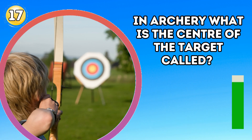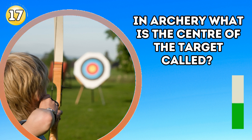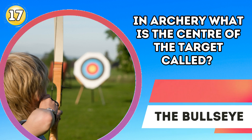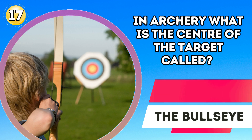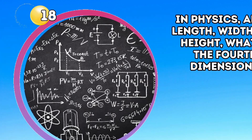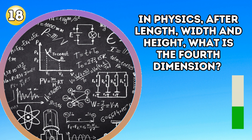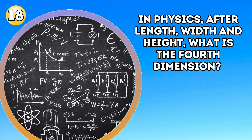In archery, what is the centre of the target called? The bullseye. In physics, after length, width and height, what is the fourth dimension? Time.